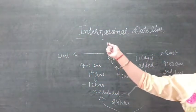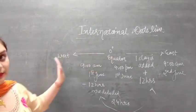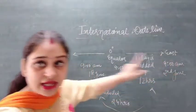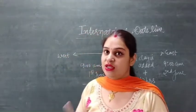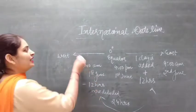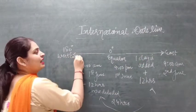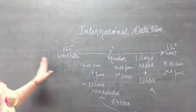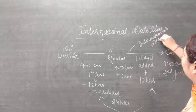The International Date Line is the line where, when somebody crosses from west to east, a day is added, and when crossed from east to west, one day is deducted. The 180 degrees east and 180 degrees west meridians both lie on the same line, and this line is called the International Date Line.